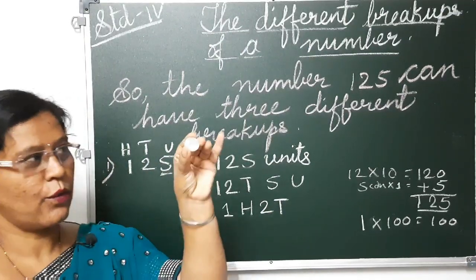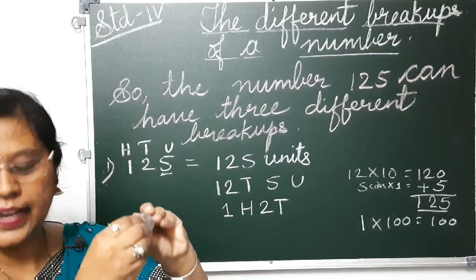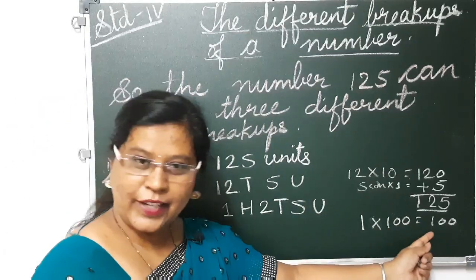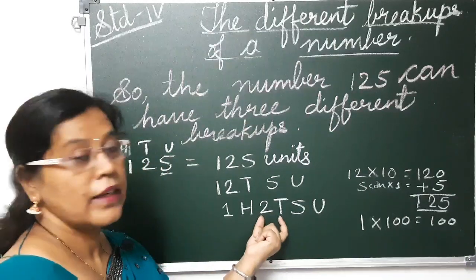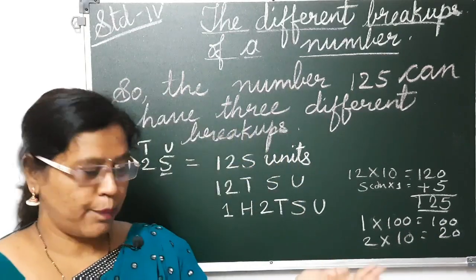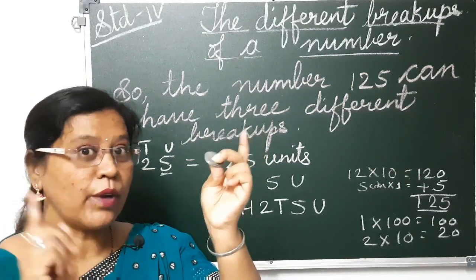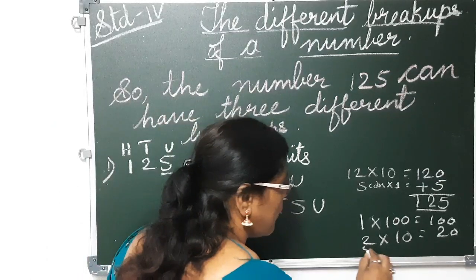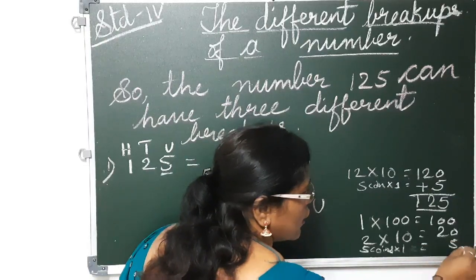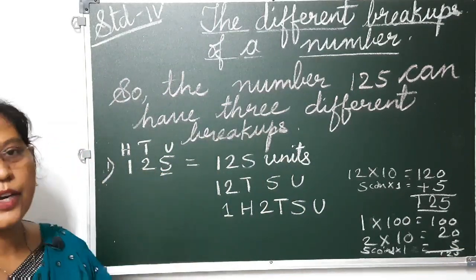5 units I am having. Can you see? 1, 2, 3, 4, and 5. So 5 units. So 100 plus 2 tens — 2 into 10 equals 20 — and 5 one-rupee coins, totaling 5 rupees. So here total is 125 rupees. It makes 125 rupees.